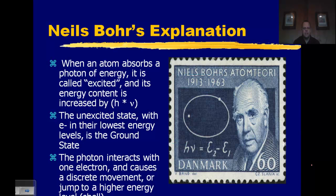So if you think of energy as Planck's constant times frequency, the atom will, the electron will absorb that energy and excite the electron moving it further away from the nucleus. Remember the electron is negative, the nucleus is positive, so as it moves further away from the nucleus, it takes more energy. The unexcited state when they are in the lowest energy level is known as the ground state. So the photon interacts with one electron and causes it to jump to a higher energy level.